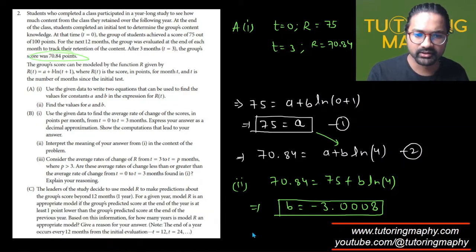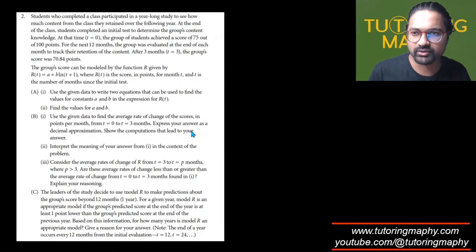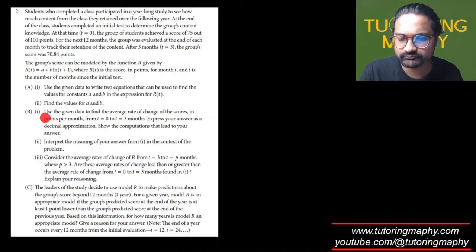Let's work on question number 2. Use the given data to find the average rate of change of the scores in points per month from 0 to 3. Express your answer as a decimal approximation. Show the computations that lead to your answer. And then interpret its meaning as well. We can do that.